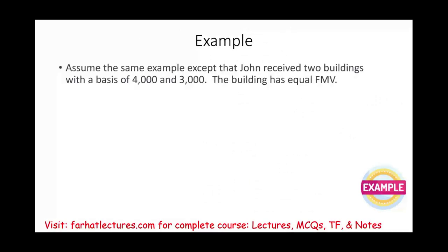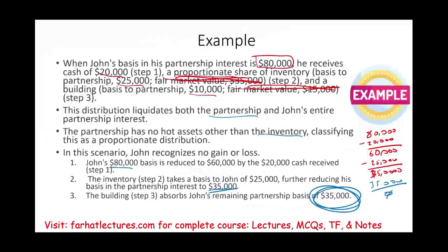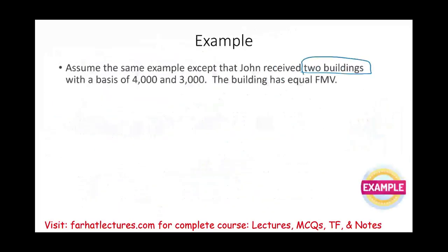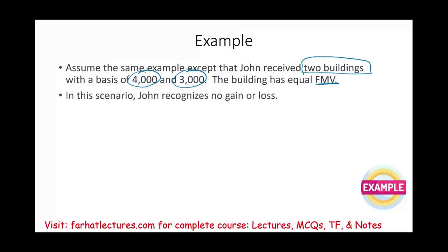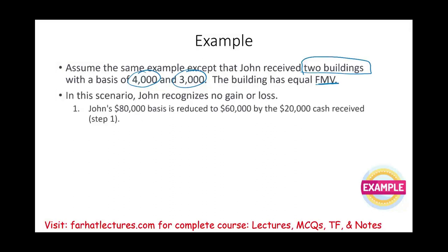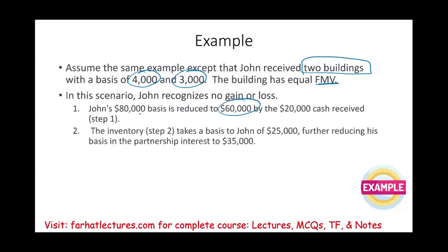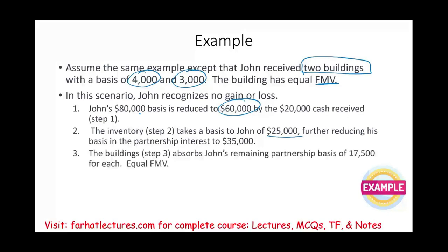Same example as John, except that John received two buildings at the end. We have: $80,000 minus $20,000 equals $60,000, then reduced by the $25,000 inventory leaving $35,000. Except now, with the $35,000, we are giving John two buildings — one building with a basis of $4,000 and another with a basis of $3,000. The fair market values of these buildings are equal.